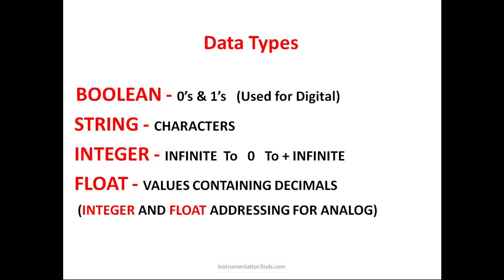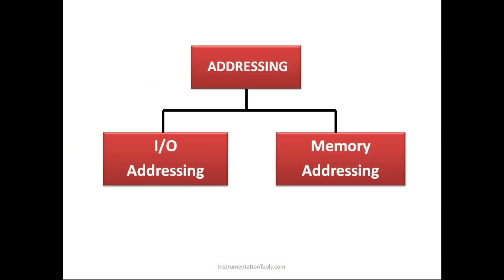An important point to notice: integer and float addressing are for analog signals, while boolean is for digital signals. So addressing can be divided into two categories: IO addressing and memory addressing.